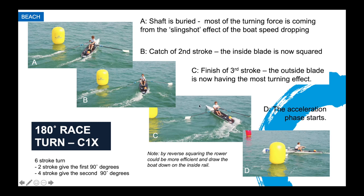This one here is taken at the end of the third stroke. You can see a lot of power going around because of the amount of wash coming off the stern. If he turned his oar over, he would be able to tilt the inside rail down — I'll show some more pictures to illustrate that. By the time he's done his sixth stroke, he's back and starting the acceleration phase on the return to the beach. What's quite interesting is that six-stroke turn — two strokes give him the first 90 degrees because of the slingshot, and four give him the second 90 degrees.